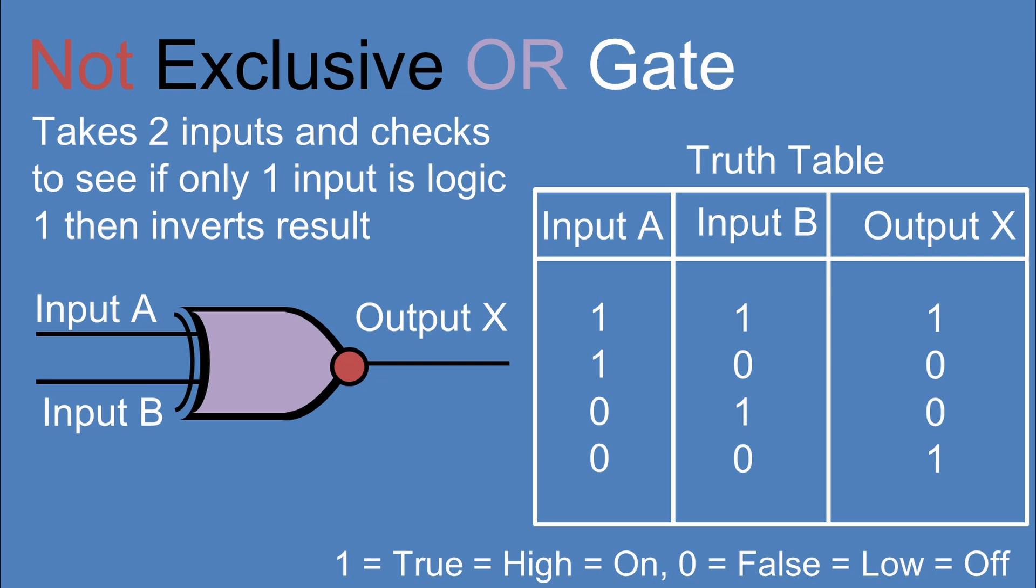Hint, we'll be using a not-exclusive OR that takes two inputs and sees if only one of the inputs is a 1 and inverts the results. So basically, both inputs have to be either a logic 1 or a logic 0 to output a logic 1 or true or on state.